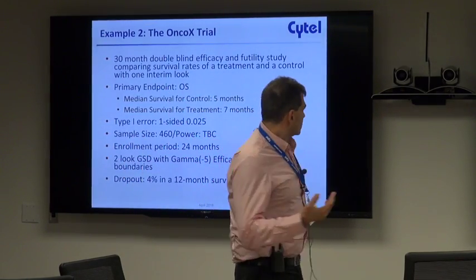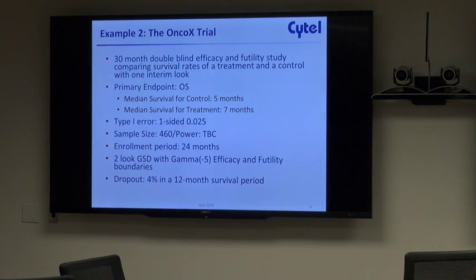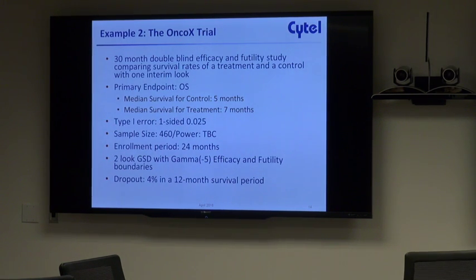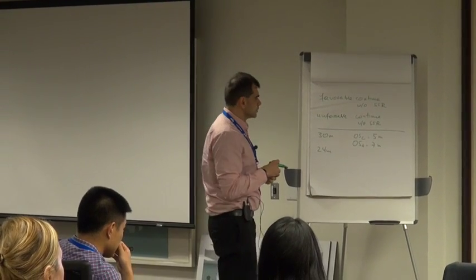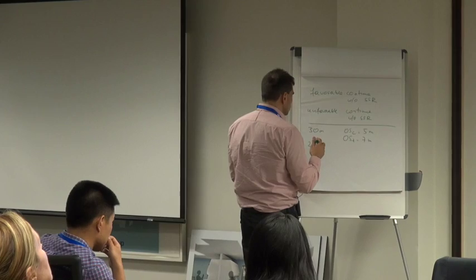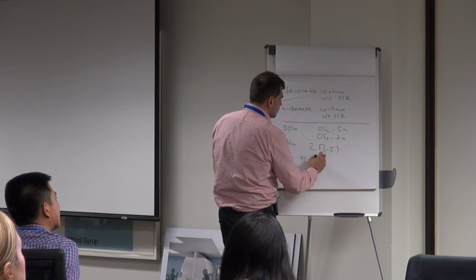This is the trial we're interested in — these are the operating characteristics. The total duration is 30 months. The primary endpoint is overall survival: five months under control, seven months under the experimental treatment. We want one-sided 0.025 error. Enrollment lasts for 24 months, and we want a two-look group sequential design with interim checks for both efficacy and futility using a gamma of minus five spending function — almost equivalent to O'Brien-Fleming, making it harder to stop early. We also have a four percent dropout in a 12-month survival period.